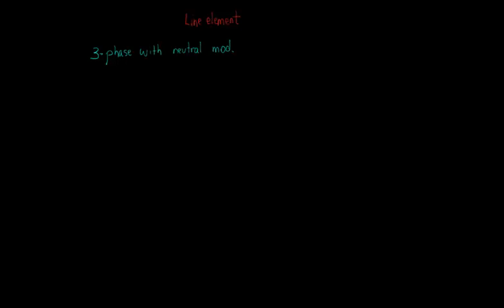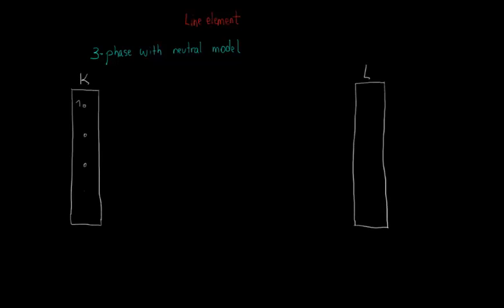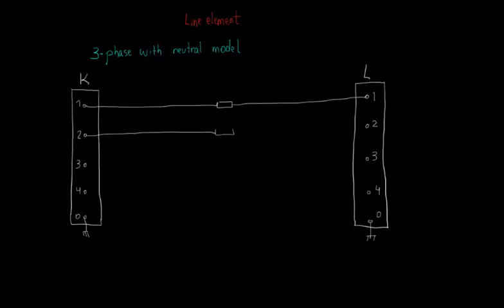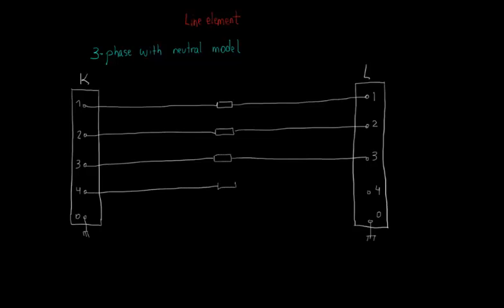Let's start with a three-phase line model with neutral, connected between two buses, which will be called K and L. The phase conductors are connected to nodes 1, 2, and 3, and the neutral conductor is connected to node 4 of each bus. In this example, we are assuming that the neutral is not grounded. If it were the case, we would have to connect the neutral conductor to node 0 of the bus in which we want to ground it.